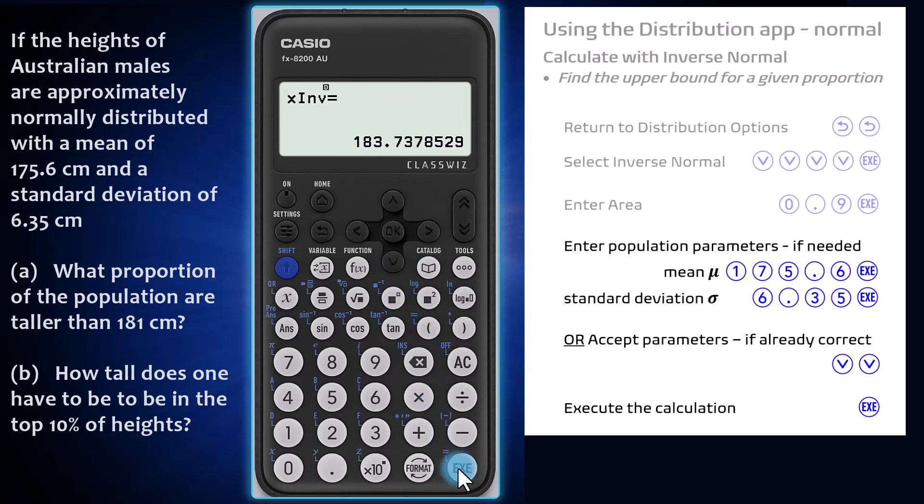This output, x inverse equals 183.7, indicates that the upper boundary of the shortest 90 percent of Australian males is 183.7 centimeters, which means that this is the height exceeded by the tallest 10 percent.